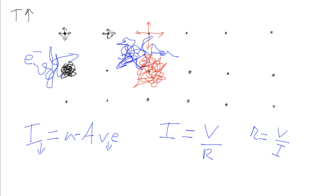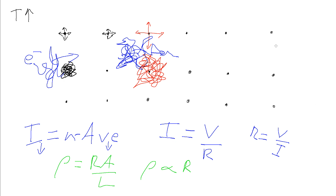Linking this to resistivity, we use the equation ρ = RA/L, where L is the length and A is the cross-sectional area of the sample. Although these two may change slightly due to thermal expansion or contraction, they're essentially constant and those small changes are negligible. So resistivity is directly proportional to resistance — as resistance goes up, so does resistivity. In metallic materials, an increase in temperature gives us an increase in resistivity.